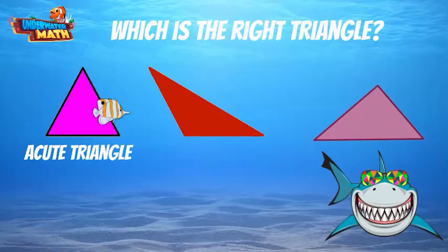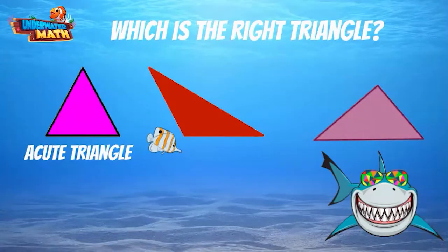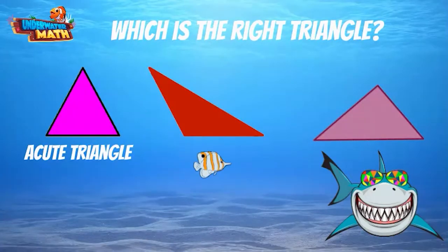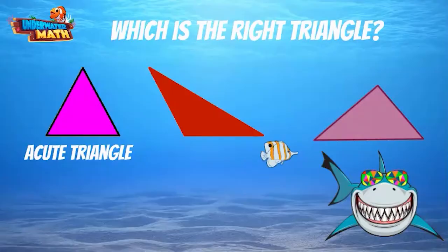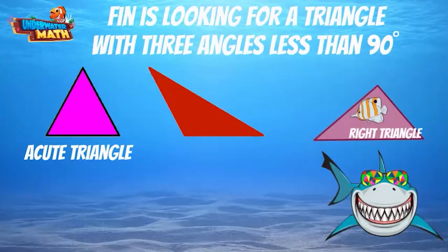Next, Finn is going to swim to the right triangle. Which one do you think is the right triangle? Right again! This triangle has two perpendicular lines forming a right angle.